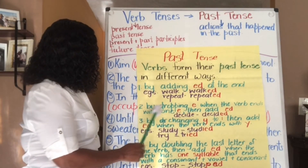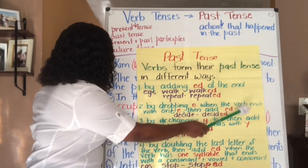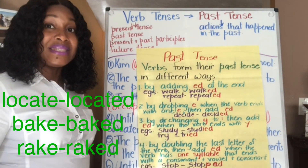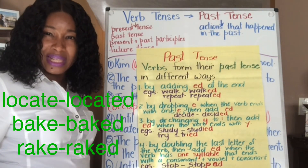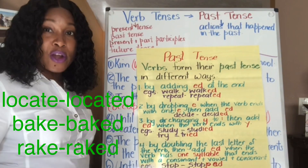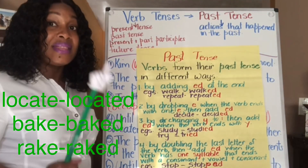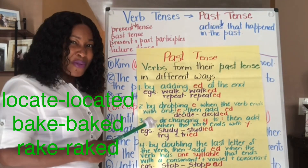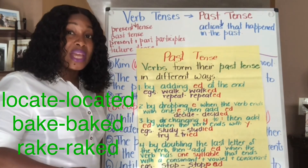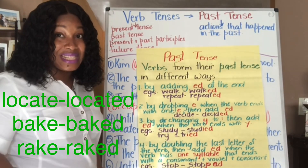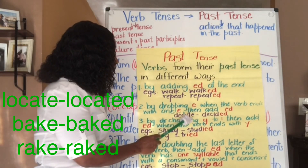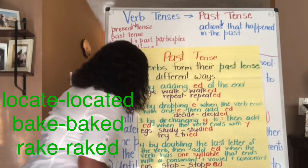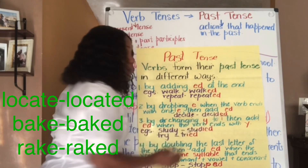Number two: by dropping the E when the verb ends with one E, then add ED. For some verbs, the last letter is a single E — not two E's, just one. In that case, we remove the E and then add ED. We do it that way so we don't forget to remove that E and end up with two E's. For 'decide' — it ends with a single E. Write back D-E-C-I-D, remove the E, then add ED.